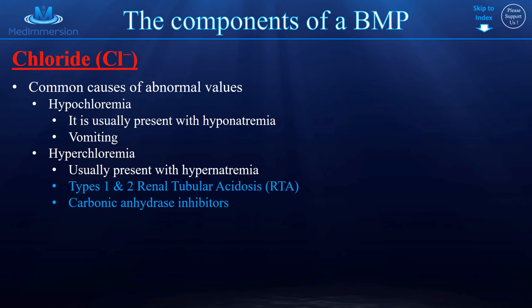For common causes of chloride abnormalities: hypochloremia can occur with hyponatremia — they go together. Vomiting also causes hypochloremia because you're losing a lot of hydrochloric acid and therefore chloride. For hyperchloremia: if you see hypernatremia, you might see hyperchloremia. Types 1 and 2 renal tubular acidosis can cause hyperchloremia. In the literature, carbonic anhydrase inhibitors can also cause it.